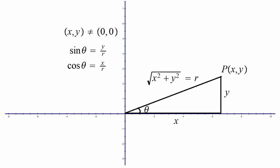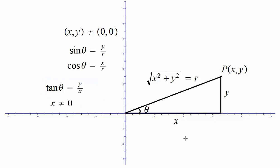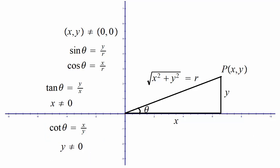Tangent would be opposite over adjacent — Y over X — and we have to assume that we are not along the Y-axis. For cotangent, you have the reciprocal, so we need the denominator not equal to zero. Secant and cosecant can be found by taking the reciprocals of cosine and sine respectively. Let's take some examples to understand it further.